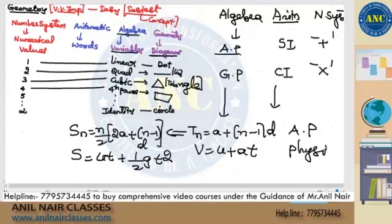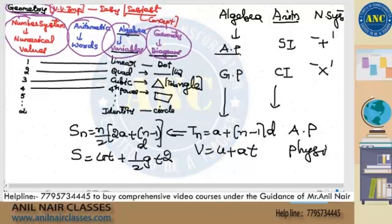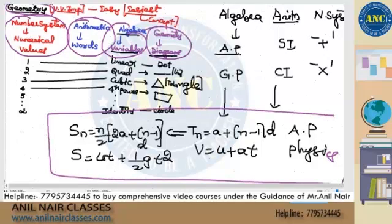The idea behind this is to tell you that the representation and nomenclature are different, but the concept is the same. Geometry uses diagrams, arithmetic uses words, number system uses numerical values, and algebra uses variables. Just follow this flow. Arithmetic progression and physics formulas are also similar — only the nomenclature is different. These are the basic connections between number system, arithmetic, algebra, and geometry.